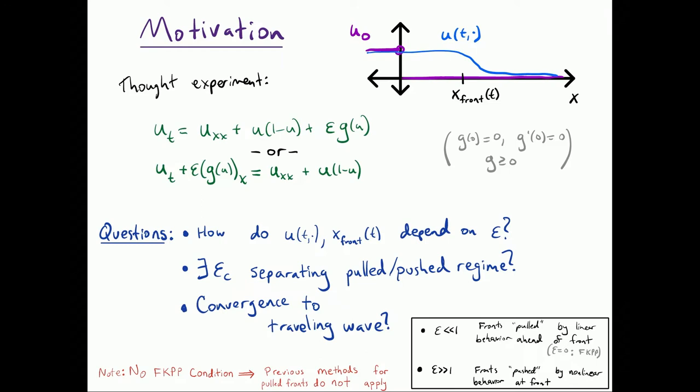So for us, we're wondering, as you vary epsilon, is there some critical epsilon where your behavior changes? And especially what happens at that critical epsilon?